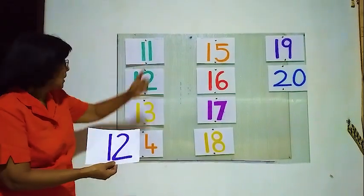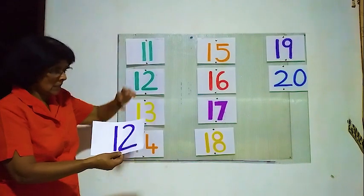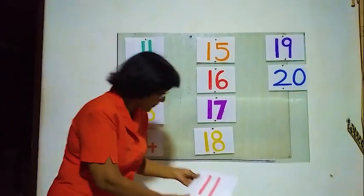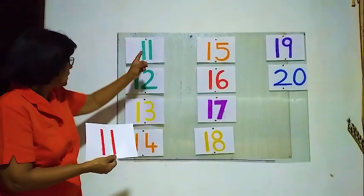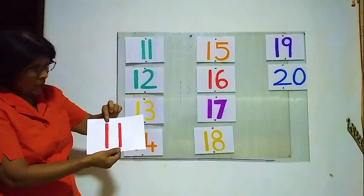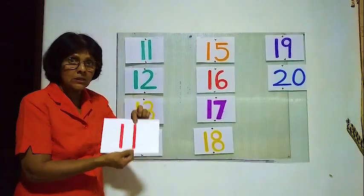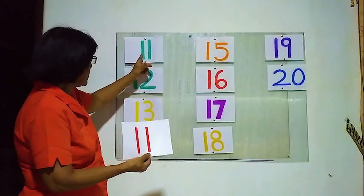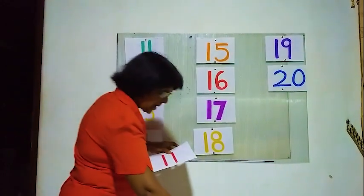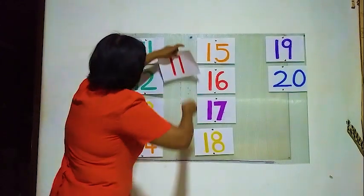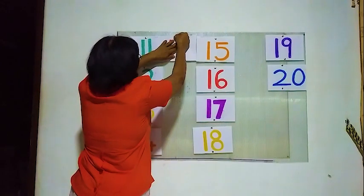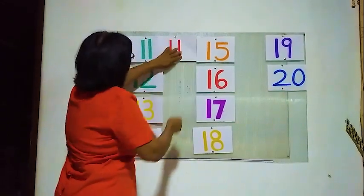This is number 11, this is number 12 — 1 and 1, this is wrong. Now we will see this one. Is this number 11? Here 1 and 1, here 1 and 1 — yes, this is correct! This is number 11. We will fix it here. This is number 11.